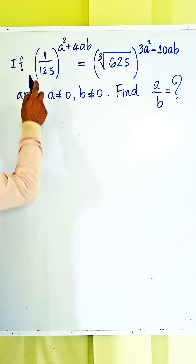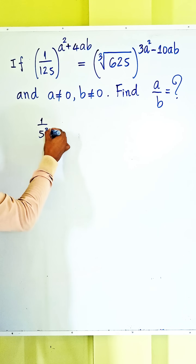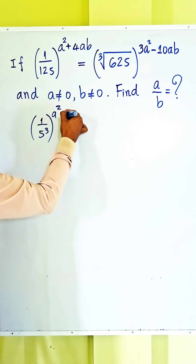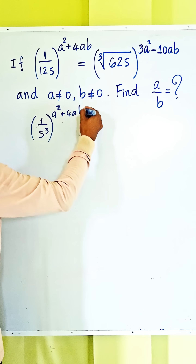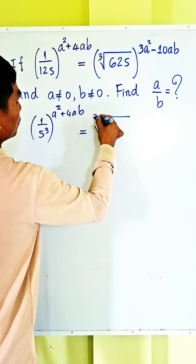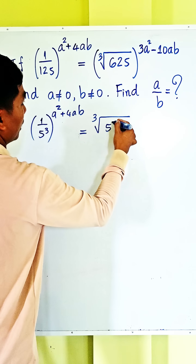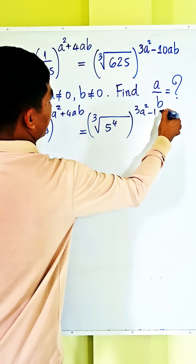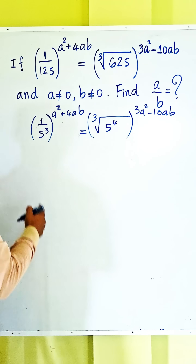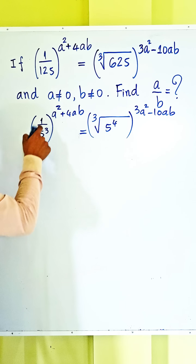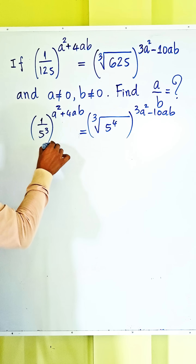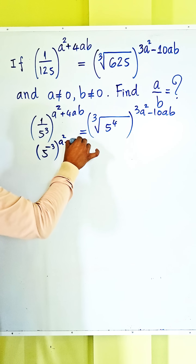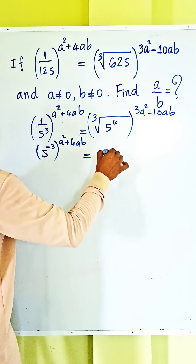We can rewrite the left side as 1 divided by 5 cubed, all to the power (a squared plus 4ab). The right side can be written as the 6th root of 5 to the power 4, all to the power (3a squared minus 10ab). Taking the reciprocal, we get 5 to the power negative 3, all to the power (a squared plus 4ab).